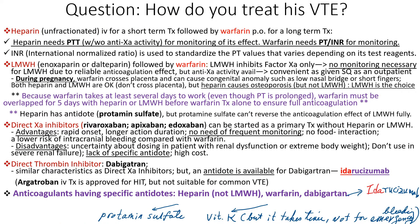How do you use these anticoagulants? Because warfarin takes at least several days to work, you have to start with heparin or low molecular weight heparin, combined with warfarin for at least four or five days for full anticoagulation. Heparin is monitored with PTT, with or without anti-10a activity. Warfarin is monitored with PT and INR — INR was developed to standardize PT values that vary depending on test reagents. Low molecular weight heparin inhibits factor 10a only, and its anticoagulation effect is very reliable, so no monitoring is necessary. If needed, anti-10a activity can be used. It is given subcutaneously, so patients can be treated as outpatients, as long as blood pressure is not low.